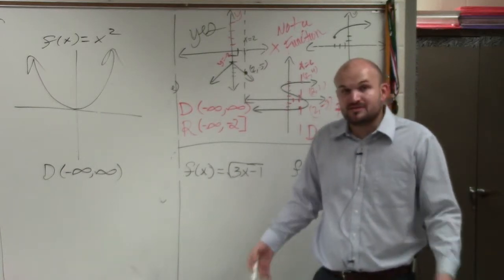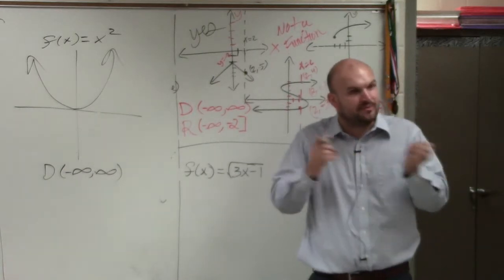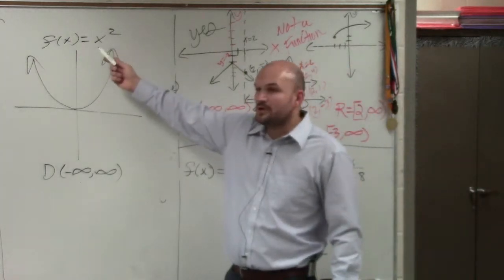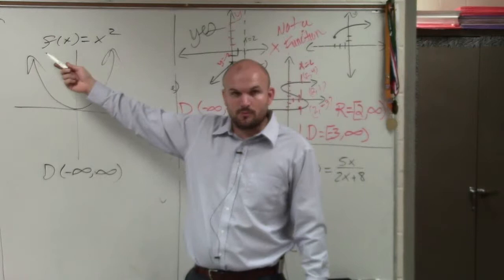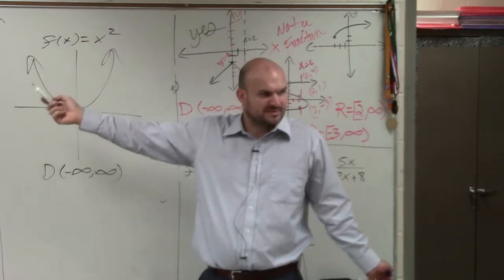The reason why the domain is all real numbers is, remember, think input, output. Is there any number I cannot put in for x and then square it to give me an output? Think of all the real numbers. Is there any number?